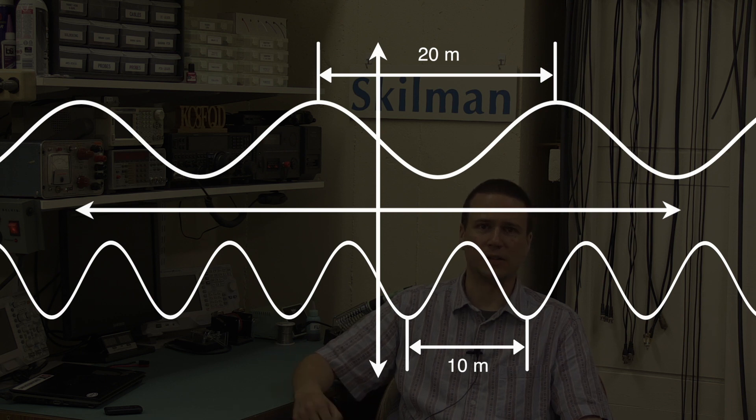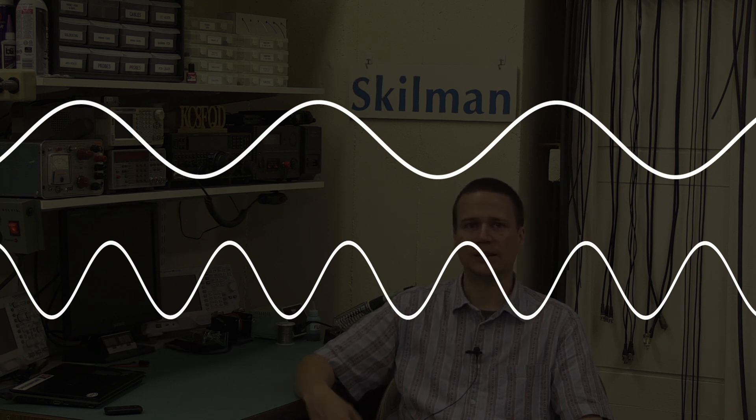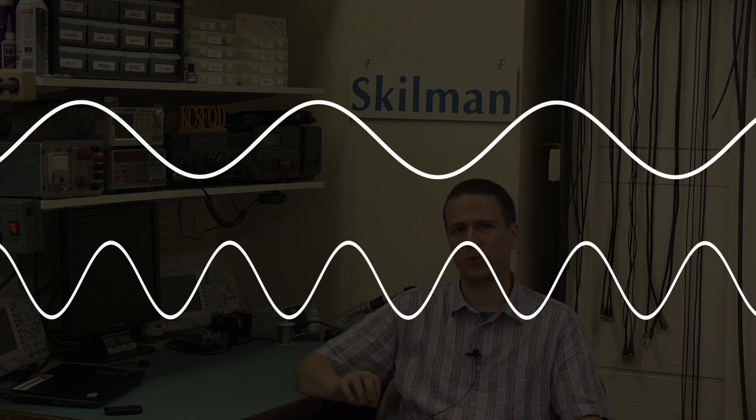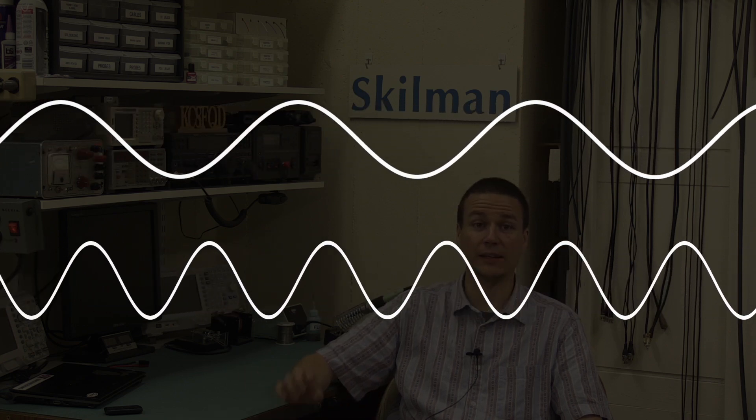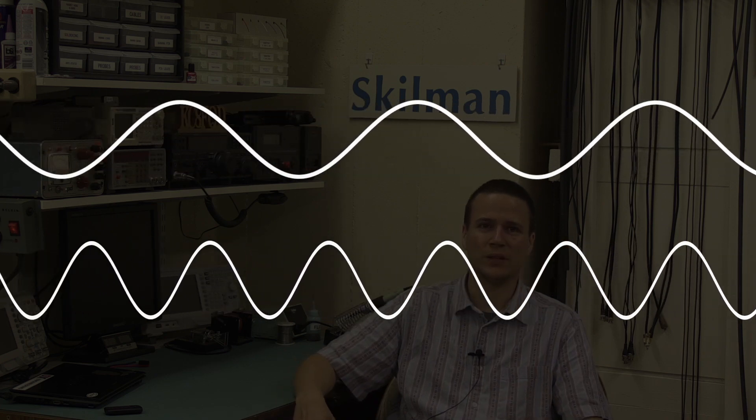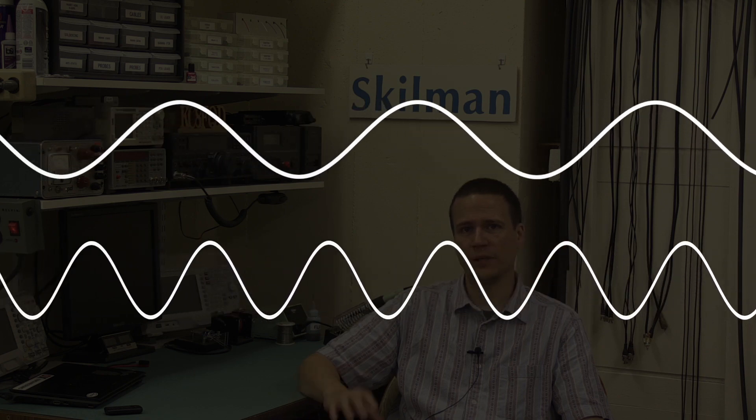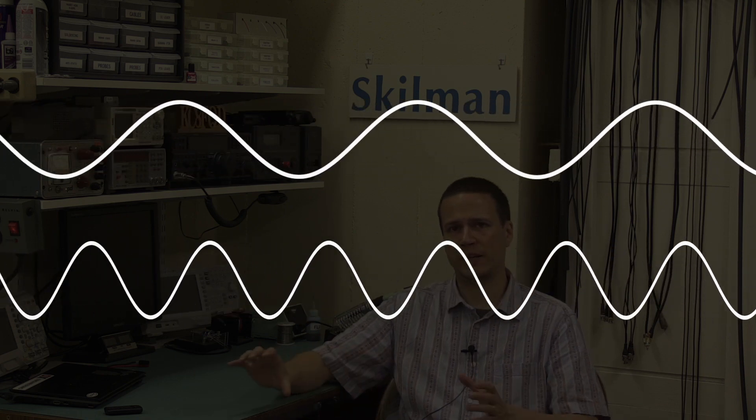Now, we've been talking about these waves at a single moment in time. As time passes, the waves propagate out from their origin at the speed of light, which is about 300 million meters per second. Now, we'll show it a little slower here. You can see that the physical location of the peaks and valleys in magnitude move through space over time.